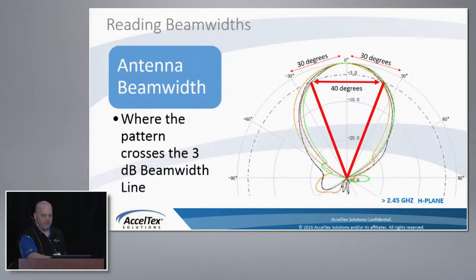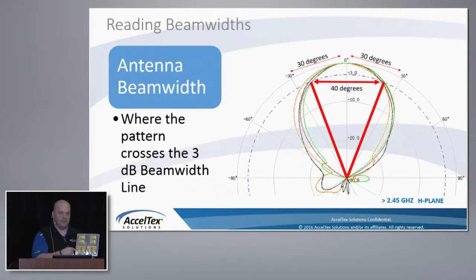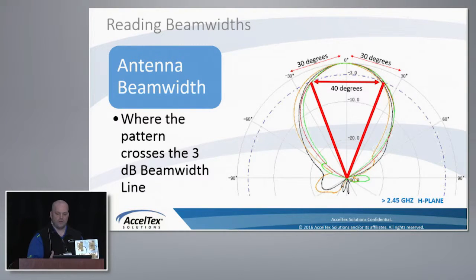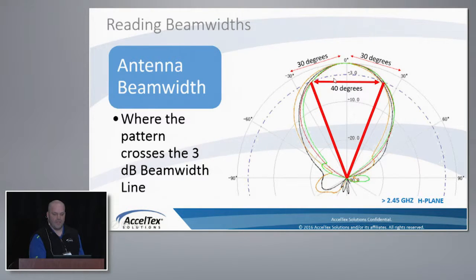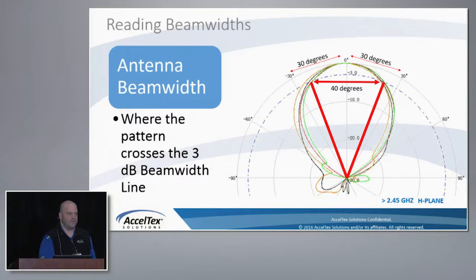We incorporate four different beam patterns on our spec sheet, one for each element, shown in four colors: green, red, blue, and orange. Some manufacturers show only a blended version, but showing all four gives a better indication of what the patterns look like. To read beam width — for example, a 40-degree pattern — you find where the four patterns cross the 3 dB line: about 20 degrees on each side equals a 40-degree beam width pattern. That's how you read a radiation pattern, but that's a topic for another time.